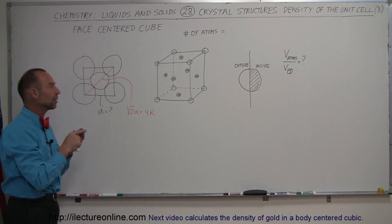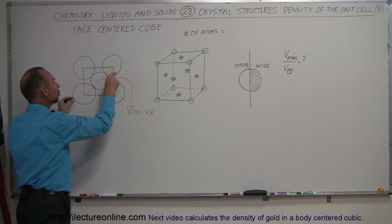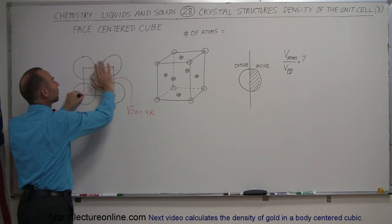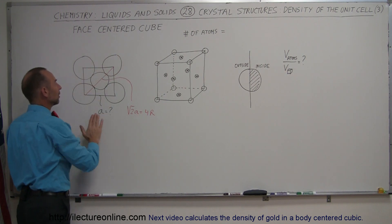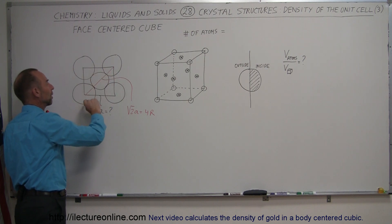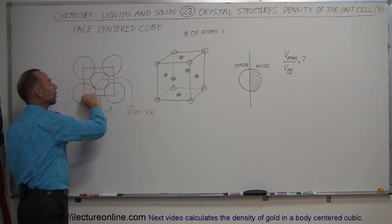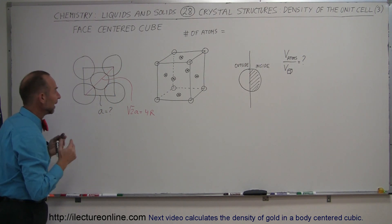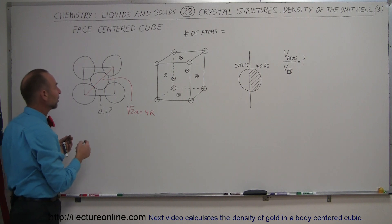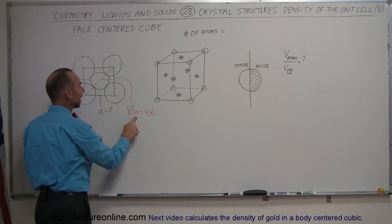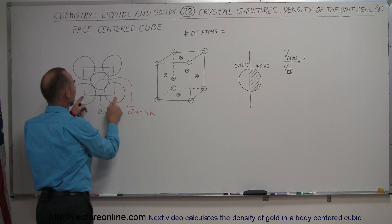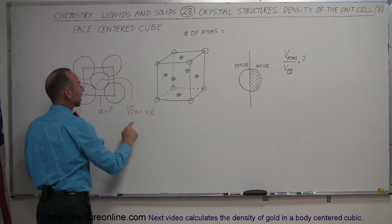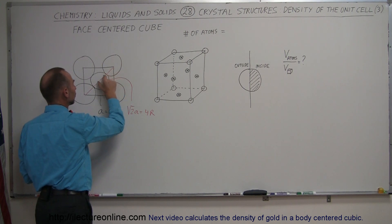Remember in the previous video we had to go diagonally through the cube from the front corner to the back corner on the other side, but we don't do that here. Here, the atoms are situated so that we can simply go across the diagonal of a face of the cube. Therefore, it's the square root of two times A, equal to four times the radius.